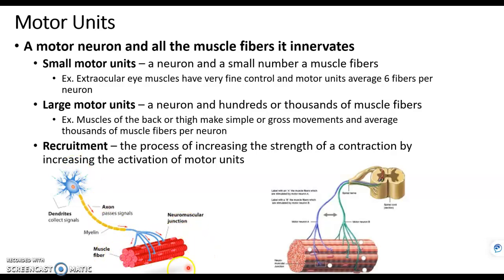A motor unit cannot be stronger or weaker — you can't get a stronger or weaker contraction from it. It either happens or it doesn't. So how do we account for a stronger contraction when we need to lift something heavier versus something lighter? We can't tell a motor unit to use more strength, because it either fires or it doesn't. So we use a process called recruitment.